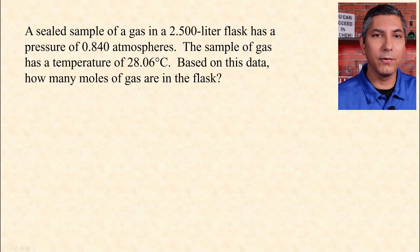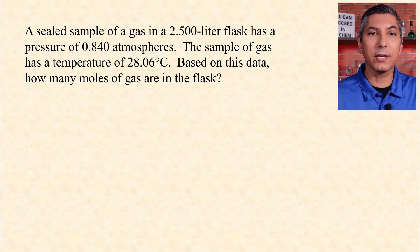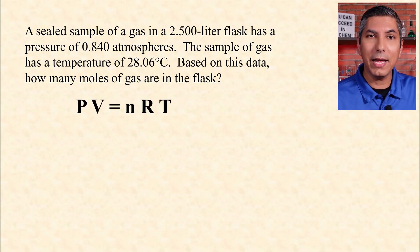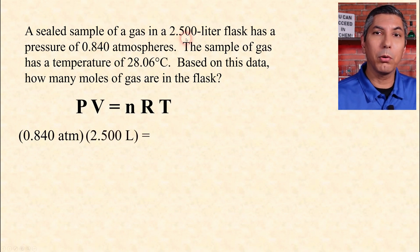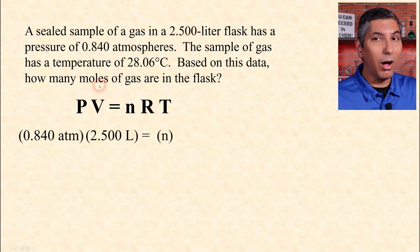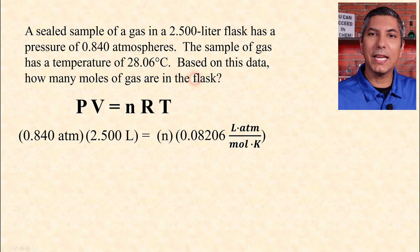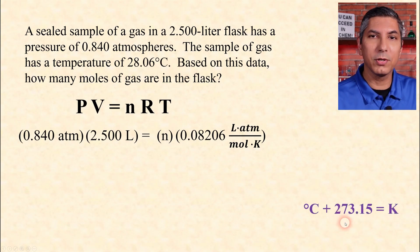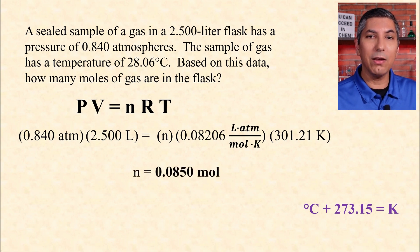Let's try this problem. A sealed sample of gas in a 2.500-liter flask has a pressure of 0.840 atmospheres and a temperature of 28.06°C. How many moles of gas are in the flask? We plug into PV = nRT: pressure is 0.840 atm, volume is 2.500 L, R is 0.08206 L·atm/mol·K, and we convert 28.06°C to 301.21 kelvins. Using algebra, we find that the number of moles is 0.0850 moles.